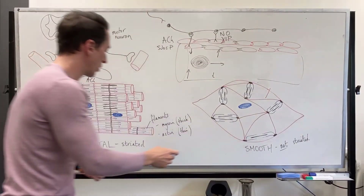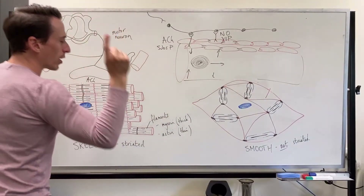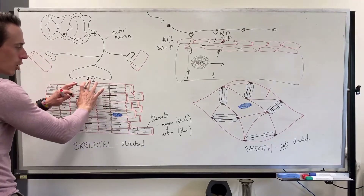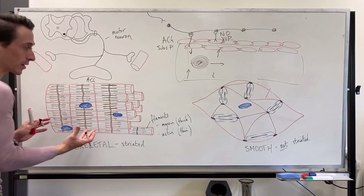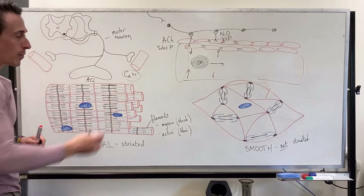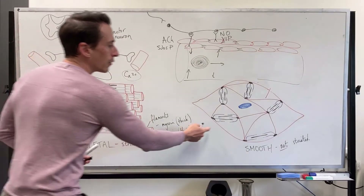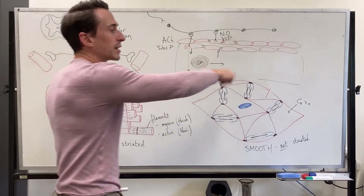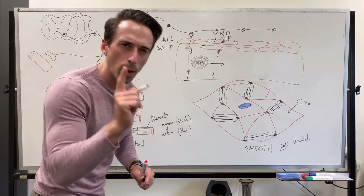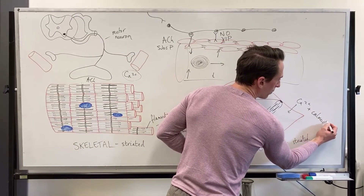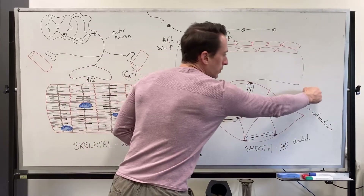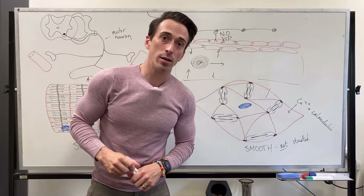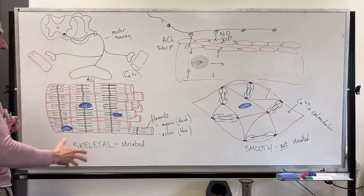Another difference: calcium is required for both. For skeletal muscle, calcium comes from the sarcoplasmic reticulum — which is the endoplasmic reticulum for skeletal muscle — and calcium is the key that unlocks the actin-myosin cross-bridges to contract. For smooth muscle, calcium comes from the endoplasmic reticulum but also comes in from outside the cell. Additionally, smooth muscle requires one more thing: something called calmodulin, found inside the muscle cell. When calcium enters or is released, it binds calmodulin, which then allows actin-myosin to bind and contract.